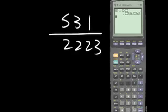Numerically, if we approximate this answer to the nearest thousandths, the first 8 is in the thousandths position. We look at the digit to the right — it's an 8. That means we add 1 to the first 8 for an answer of 0.239.